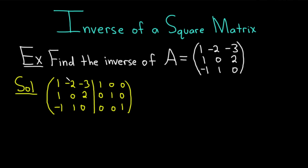The goal is to make the left matrix look like the identity matrix on the right. We want to turn this into the identity matrix, and we do it one column at a time. The first step is to make the top entry a 1, which it already is, and then make the numbers below it 0. Then we make the middle entry a 1 and the numbers above and below 0, and so on.